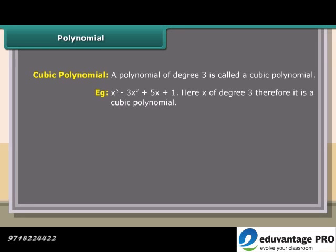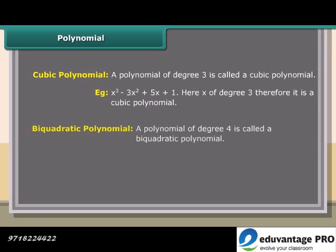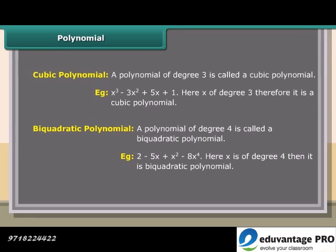A polynomial of degree 3 is called a cubic polynomial. Example: x³ minus 3x² plus 5x plus 1 — here x is of degree 3, therefore it is a cubic polynomial. A polynomial of degree 4 is called a biquadratic polynomial. Example: 2 minus 5x plus x² minus 8x⁴ — here x is of degree 4, therefore it is a biquadratic polynomial.